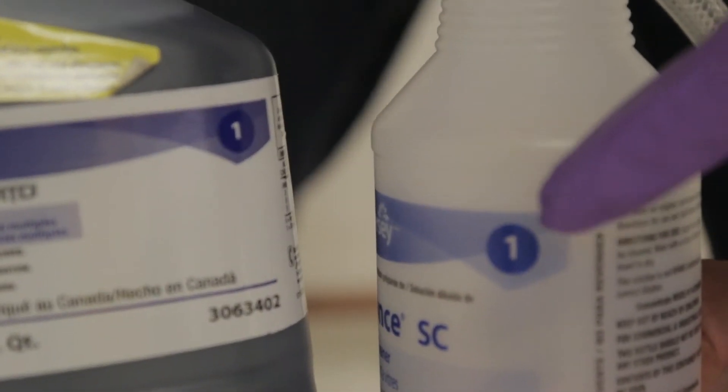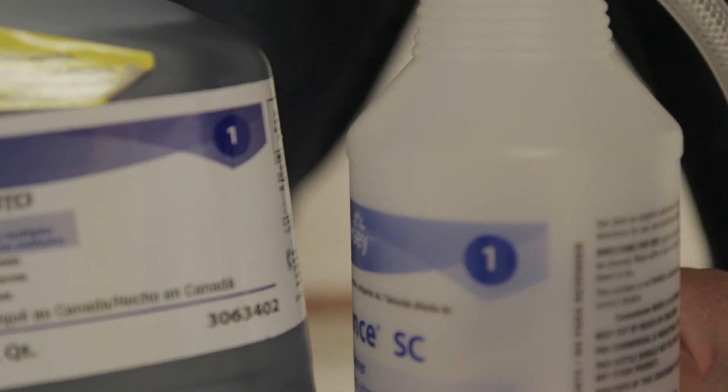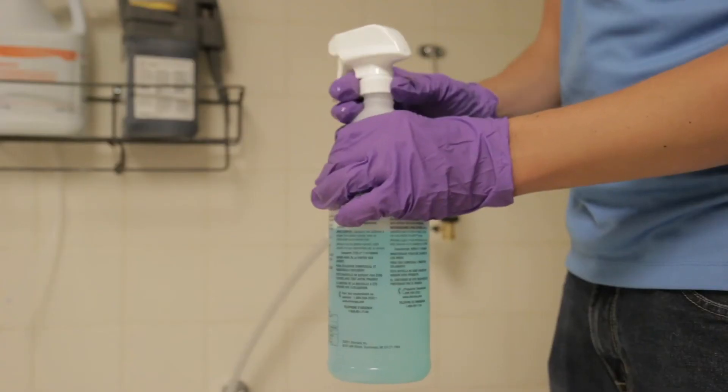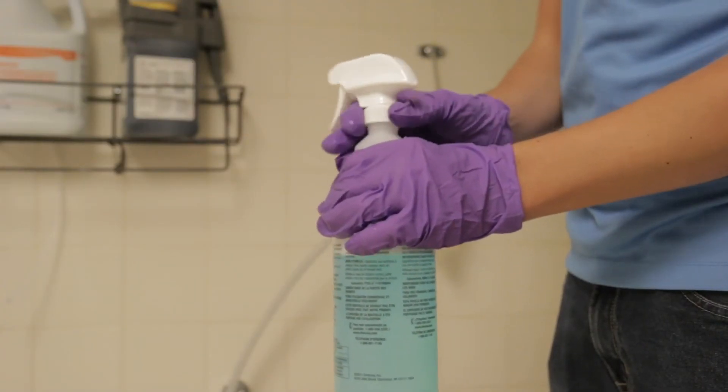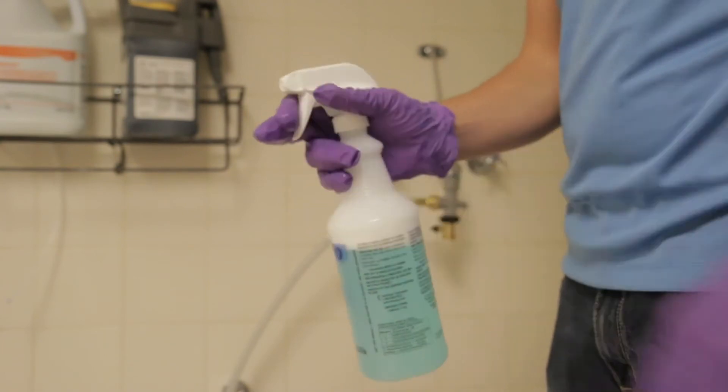The RTD line of products are color and number coded to prevent chemical misuse or contamination. The RTD product label and the label on the trigger sprayer should match.